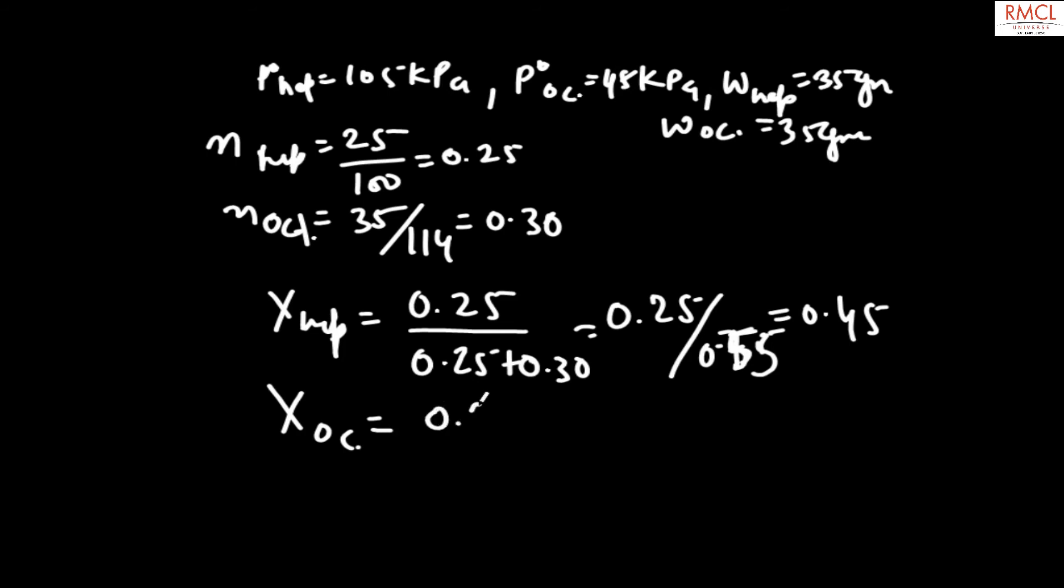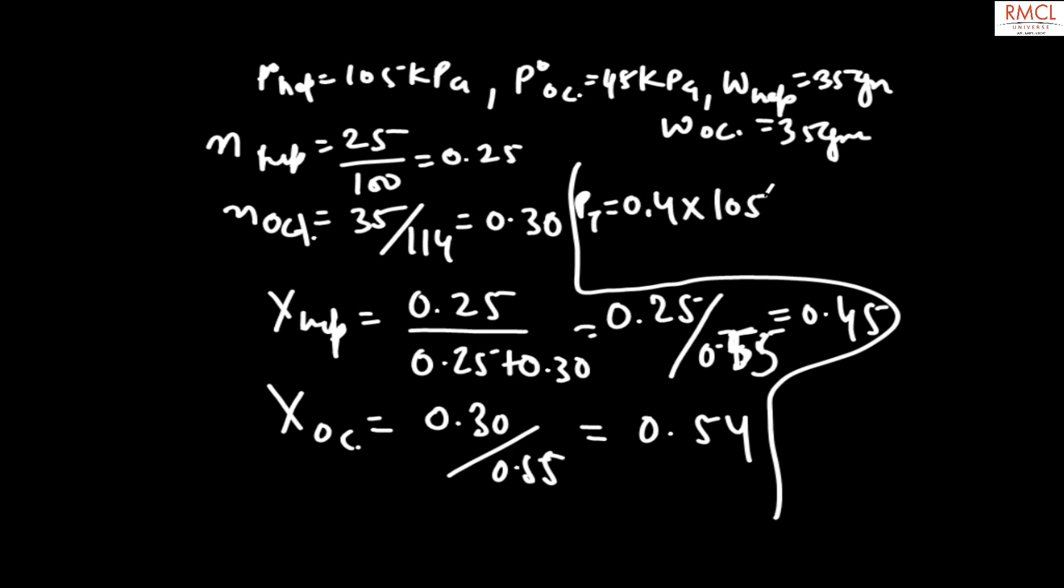X octane is 0.30 divided by 0.55, which equals 0.54. The pressure P total is equal to 0.45 multiplied by 105 plus 0.54 multiplied by 45.